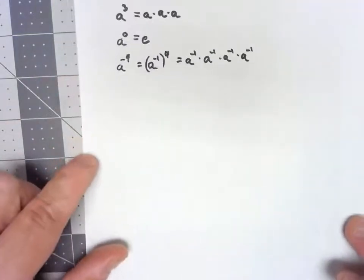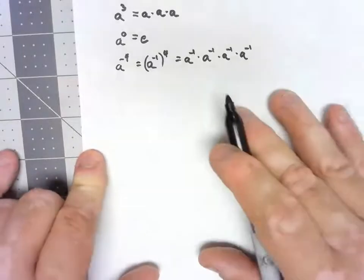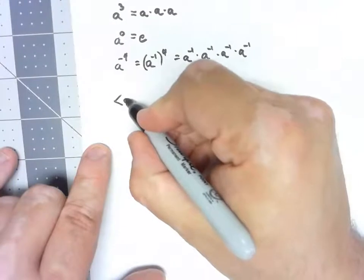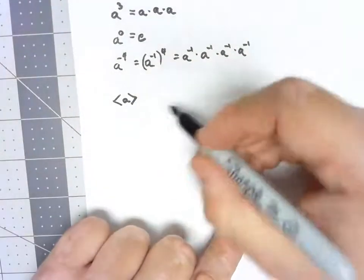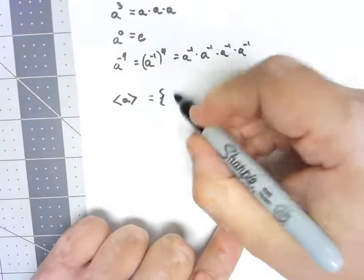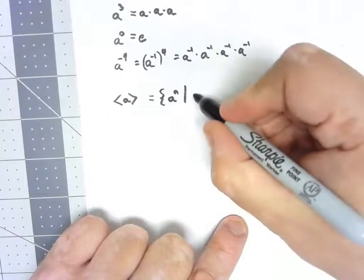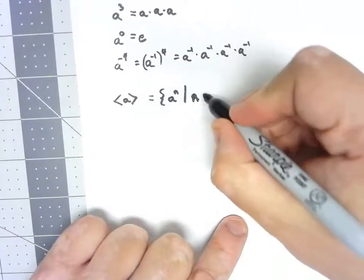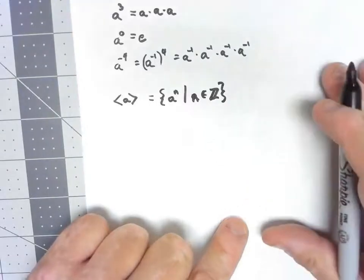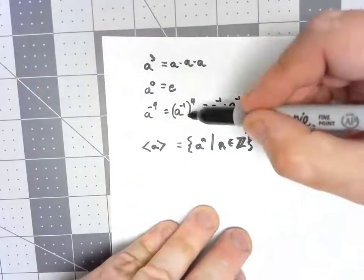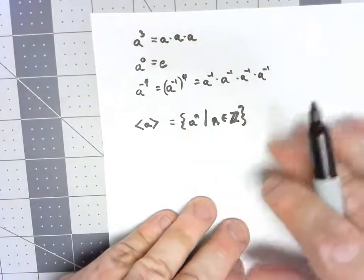Now, understanding that power notation, I'm going to define something else. It's the set of all a to the n such that n is an integer. So it can be positives, zeros, negatives — all those things — any integer power of an element.